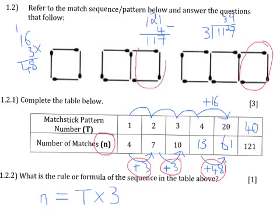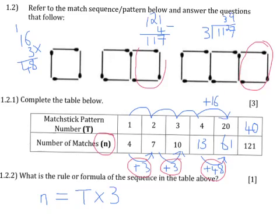But now, if I use substitution, I'll just take the first example where there's matchstick pattern number one and there are four matches. If I substitute matchstick pattern, which is number one, is T. So if I put T is equal to one, one times three, one times three is three. However, it's telling me that it should be four. So then mathematically, what I have to do to adjust for that is I just have to add one.